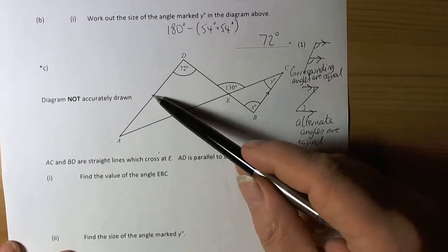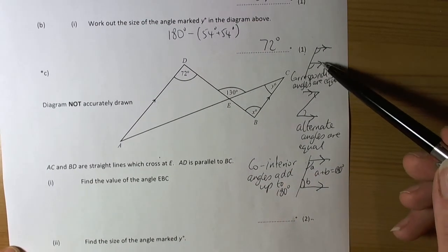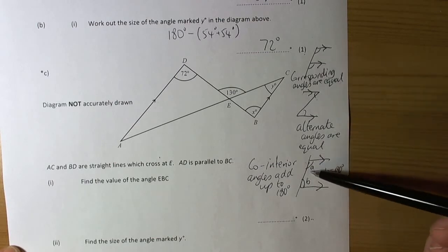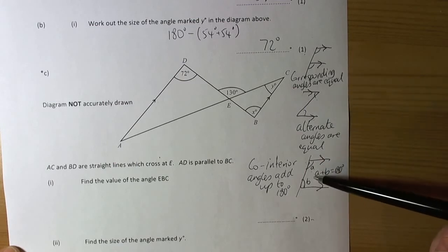So when we see parallel lines in an angles question, then we need to be thinking, it could be any one of these three rules that we need to be giving us reasons for why we have chosen a particular angle.